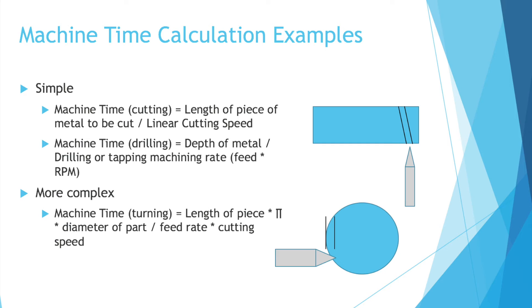A more complex example would be machine time of something being turned equals the length of piece times pi times the diameter of the part divided by the feed rate times the cutting speed. So the top part of this equation is essentially saying what's the circumference of the part that's being turned and how long is it? So that will help you determine how much material you will want to remove. You will then divide that by the feed rate, so how quickly is the part spinning times the cutting speed. So how quickly are you going to move that tool into or out of the part or left to right? So up and down the length of the part.